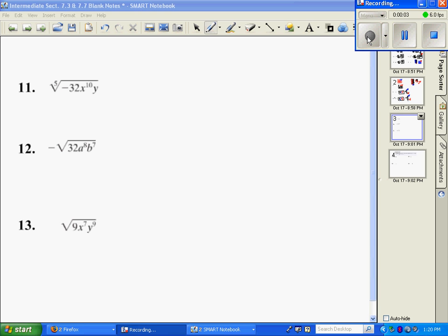Number 11, we have the 5th root of negative 32. That means negative 2 multiplied 5 times is negative 32. So if you need to, put that in the calculator and you get negative 2.